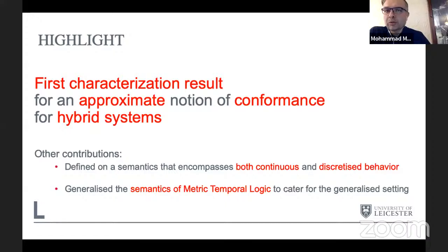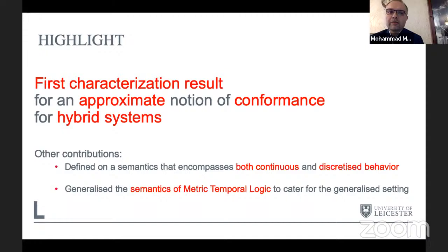Muhammad gives a brief overview and background. They present what they believe is the first characterization result for an approximate notion of conformance for hybrid systems. For example, de Alfaro, Stoelinga and associates have a logical characterization for metric transition systems, but to their knowledge there has been no logical characterization for hybrid label transition systems — this is the first one in the literature.